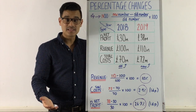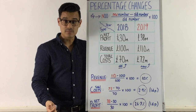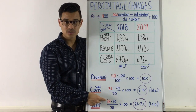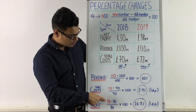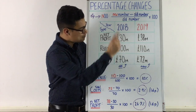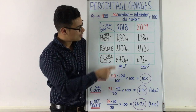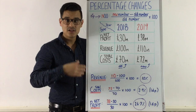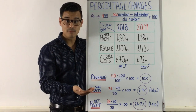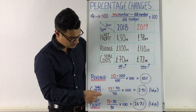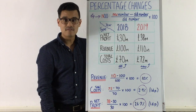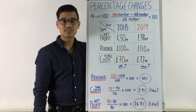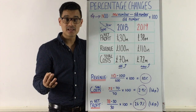Now let's work out the percentage change of profit. We follow the same process. The new number for profit is 38 million. If we take off the old number — 30 million from the previous year — and divide by that same old number, 30: so 38 minus 30 divided by 30 times by 100. That comes to 26.7% to one decimal place.